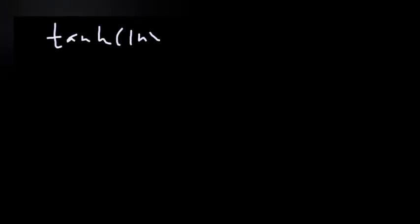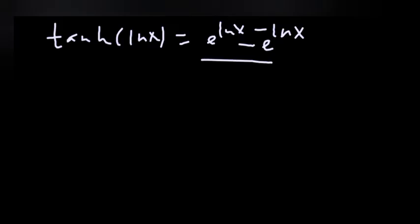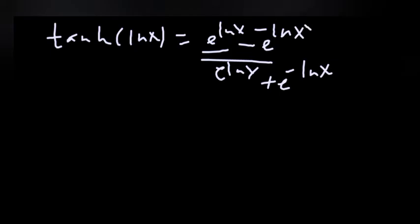For part A: tanh(ln x) is equal to (e to the power of ln x minus e to the power of minus ln x) over (e to the power of ln x plus e to the power of minus ln x).